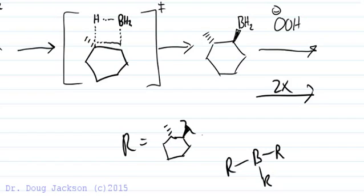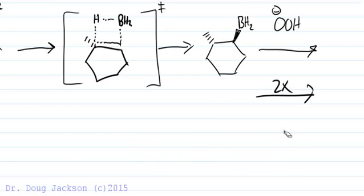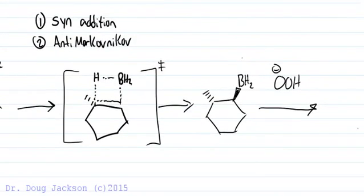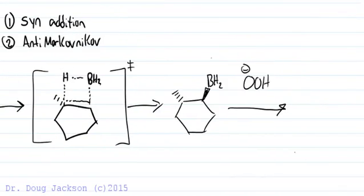But to simplify the mechanism, we are going to just show it happened once, make it easier to draw for us. So dump the electrons from the lone pair into the boron.